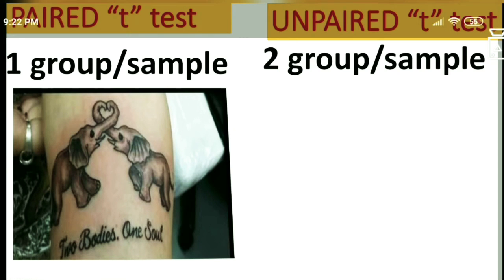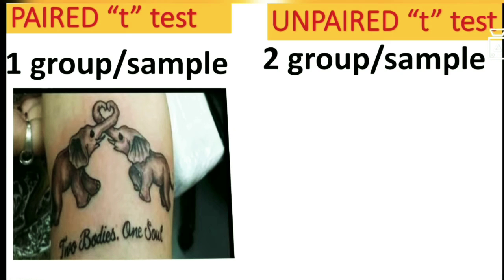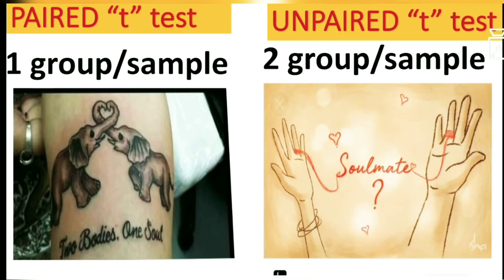For unpaired t-test, remember it as two groups or two samples. Suppose you are single and not paired with anybody, but we know there is someone for you — your soulmate. So even if you are unpaired, your soulmate is waiting, making it two groups. You are one yet you are missing your other half, so it becomes two groups. Unpaired = two groups; paired = one group.